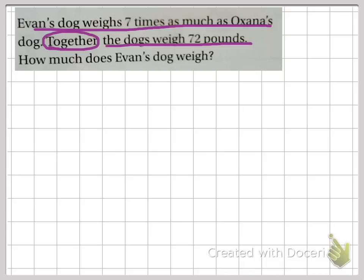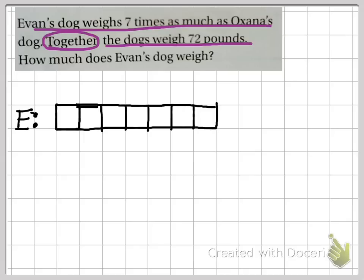We don't know what each dog weighs, but we do have a comparison statement. We know that Evan's dog is seven times as much as Ohana's. I'm going to put Evan. You want to label. He's seven times as much. So one, two, three, four, five, six, seven. Make seven copies of Ohana's dog.